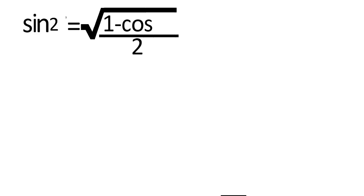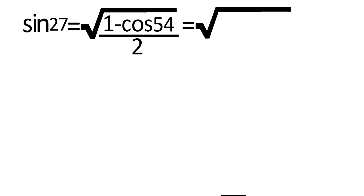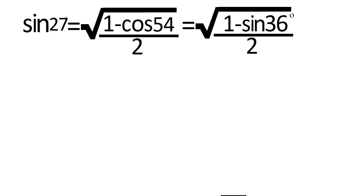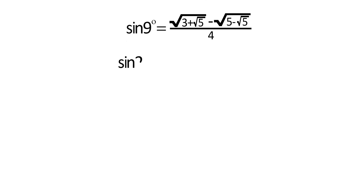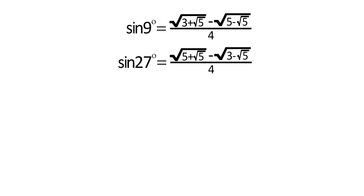Similarly, sin 27° = √((1 − cos 54°) / 2), which equals √((1 − sin 36°) / 2). After putting the value of sin 36° and solving, we get sin 27° = (1/4)√(5 + √5) − √(3 − √5).